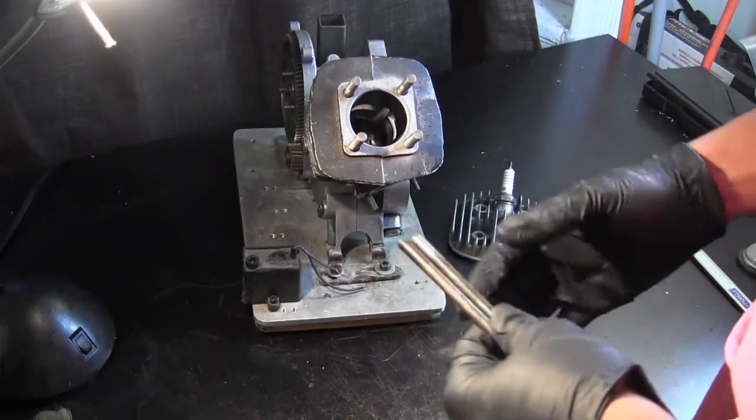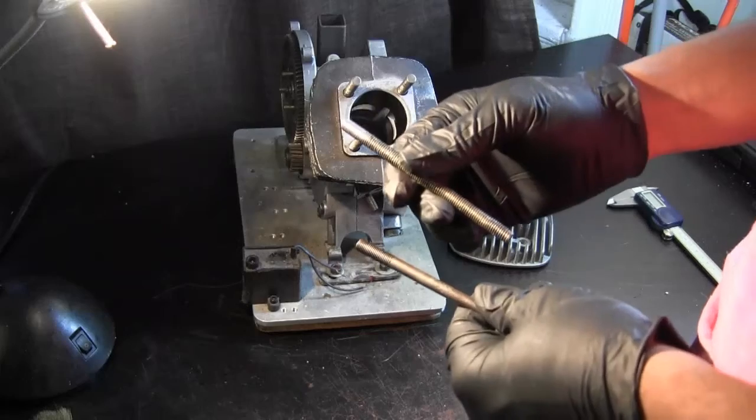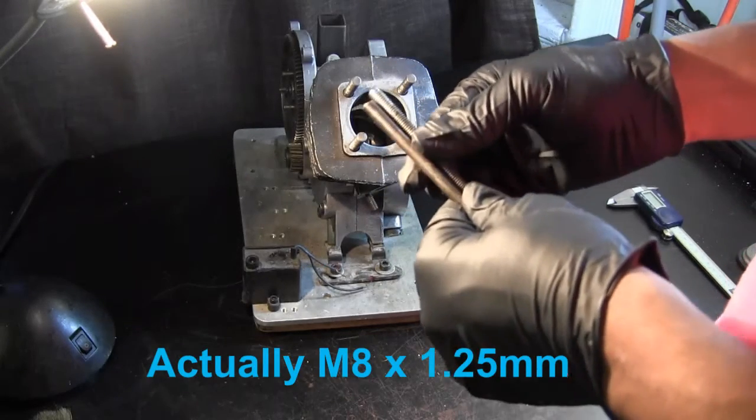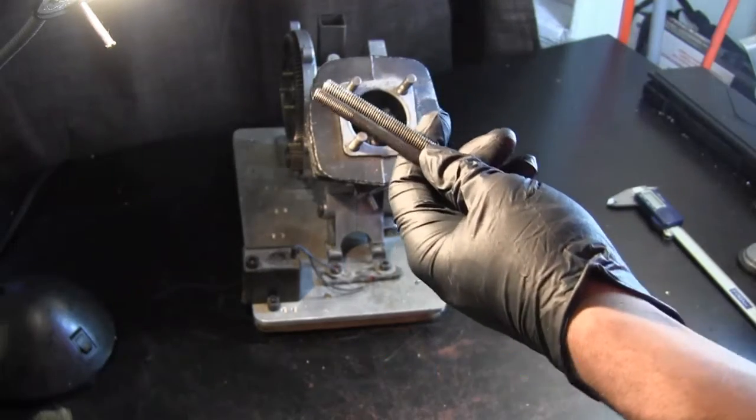So with these motorized bicycle engines, they come in two different varieties, two different flavors rather. The first flavor I'll start with is the m8 by 1.25 millimeter pitch. Now the pitch is basically the distance in between each thread.